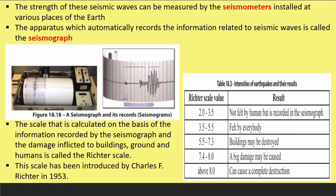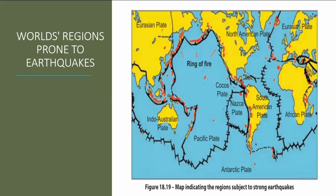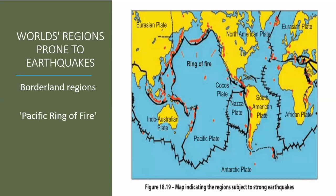A table indicates the intensities of earthquakes and their results. If the Richter scale reading is between 7.4 to 8, big damage may be caused. A world map shows regions where strong earthquakes have occurred, and it is clear that earthquakes occur mostly in borderland regions between tectonic plates. Most earthquakes have broken out in the region called the Pacific Ring of Fire, which is the border of the very large Pacific tectonic plate.